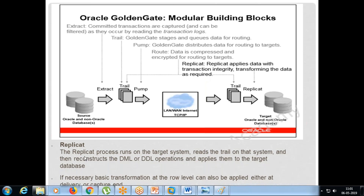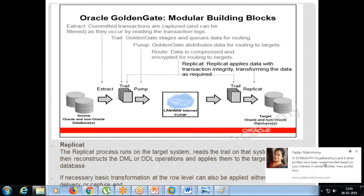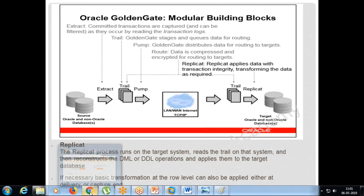As you can see, the replicate process runs on the target, reads the trail on that system, and then reconstructs the DML or DDL operations and applies them to the target.